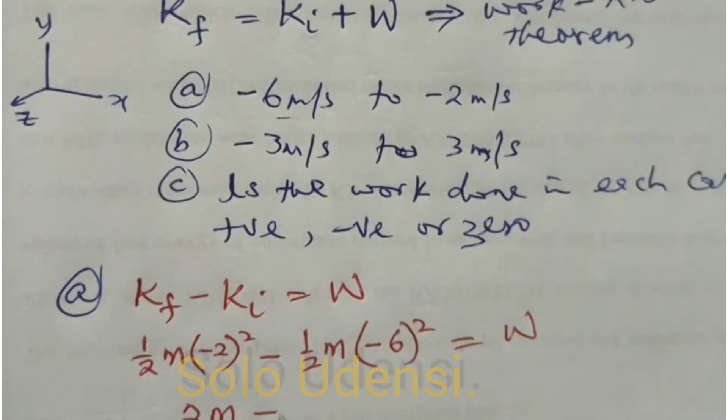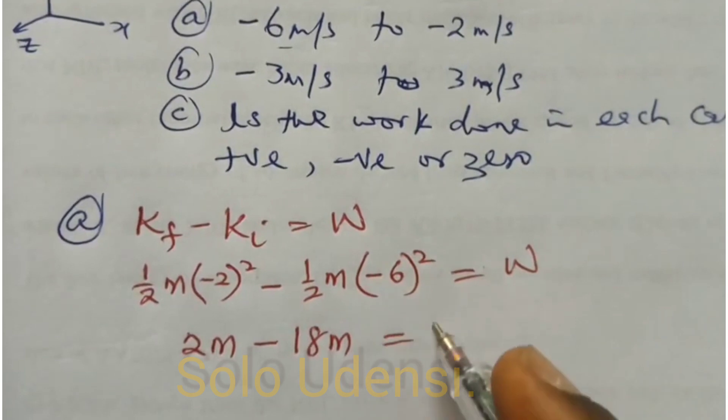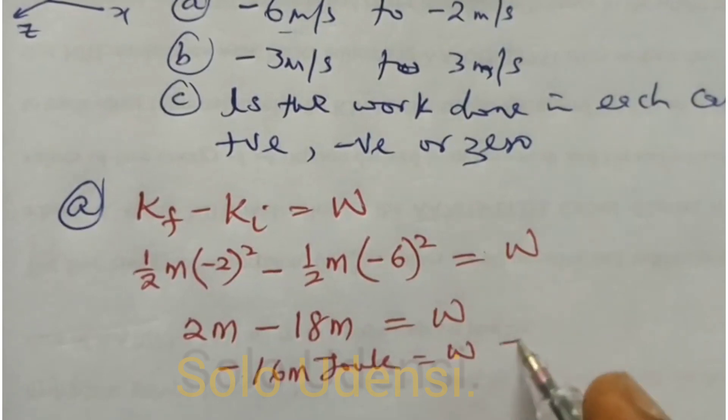So which means that minus 16 joule is equal to W, so it is negative work.